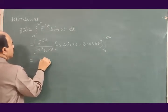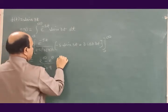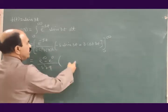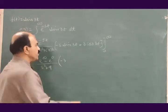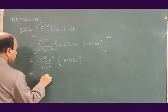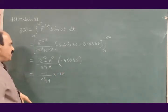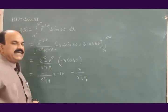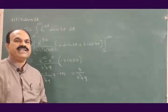This gives e to the power minus infinity minus e to the power 0, divided by s squared plus 9. Since sin(infinity) is undefined and sin(0) is 0, the first term becomes 0. For the cosine term, cos(0) is 1, so we get minus 3 times 1. This is nothing but 3 divided by s squared plus 9. So the Laplace transform of sin(3t) is 3 divided by s squared plus 9.